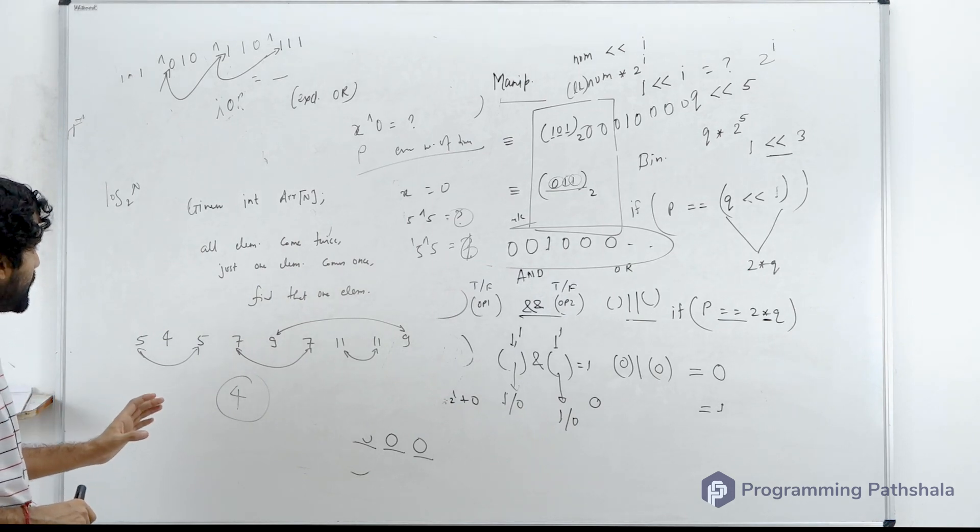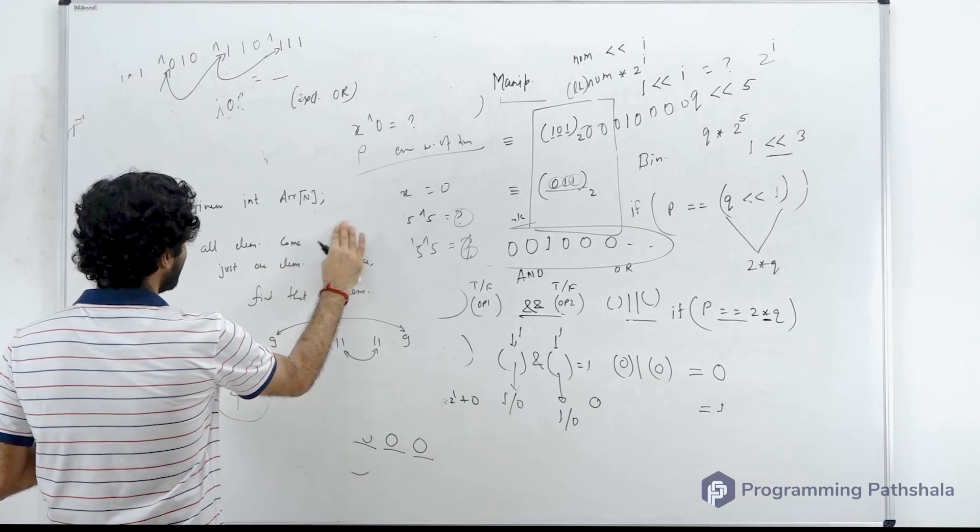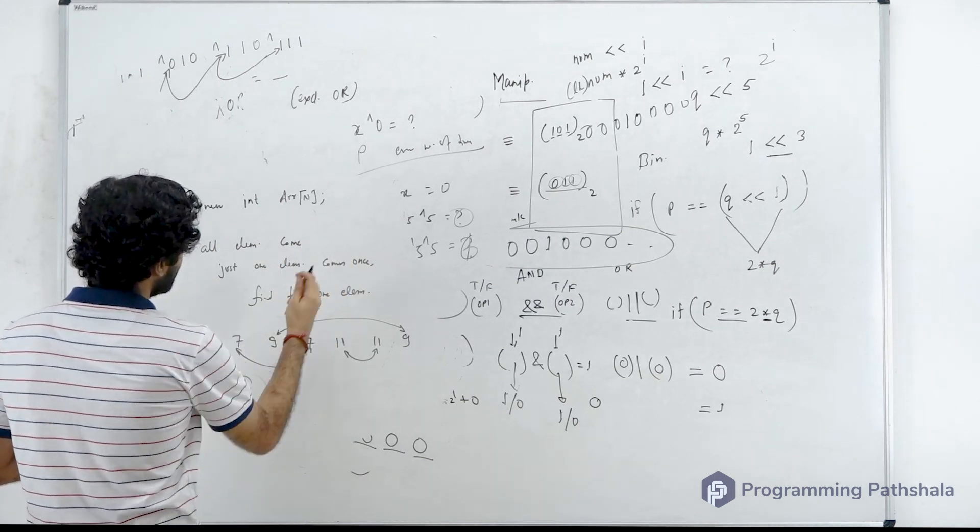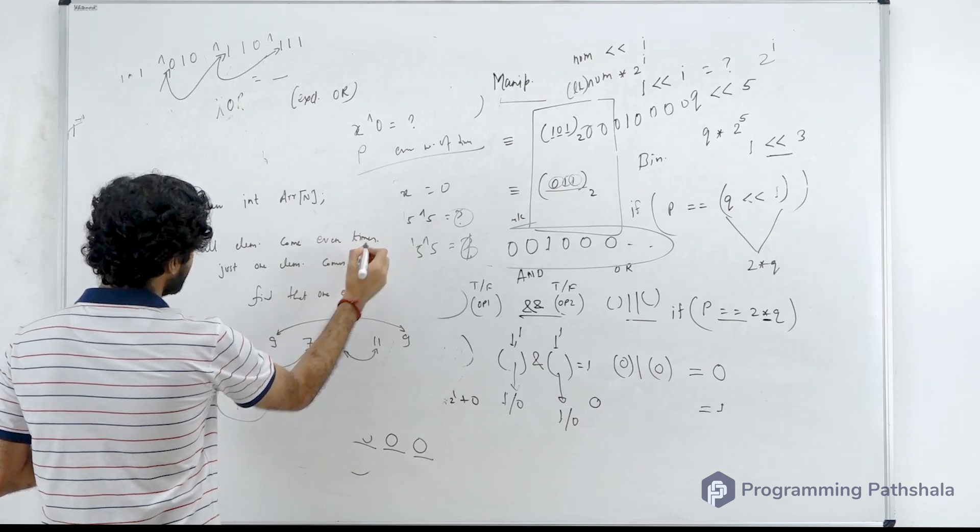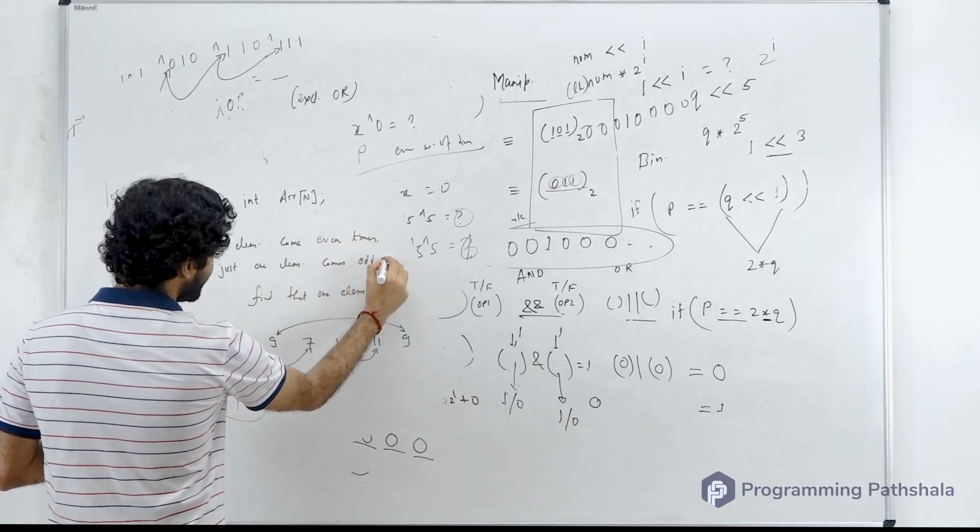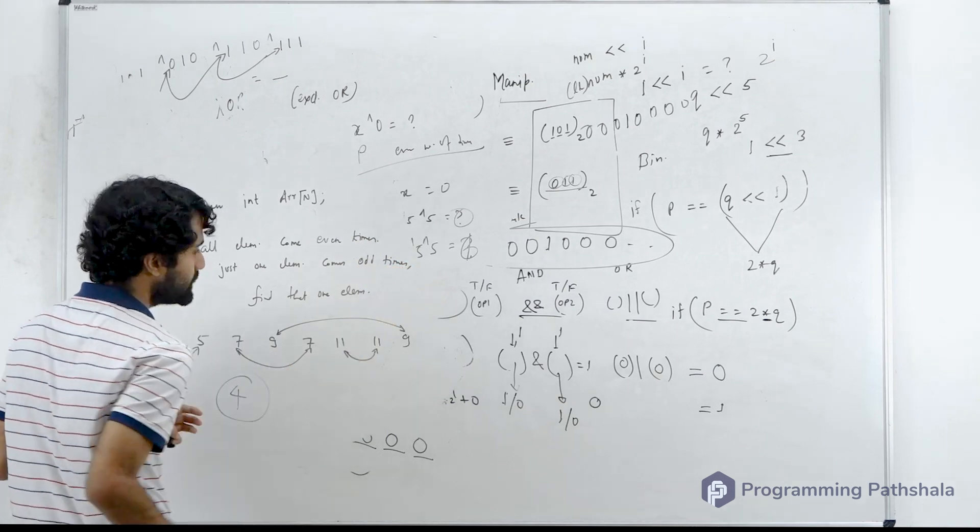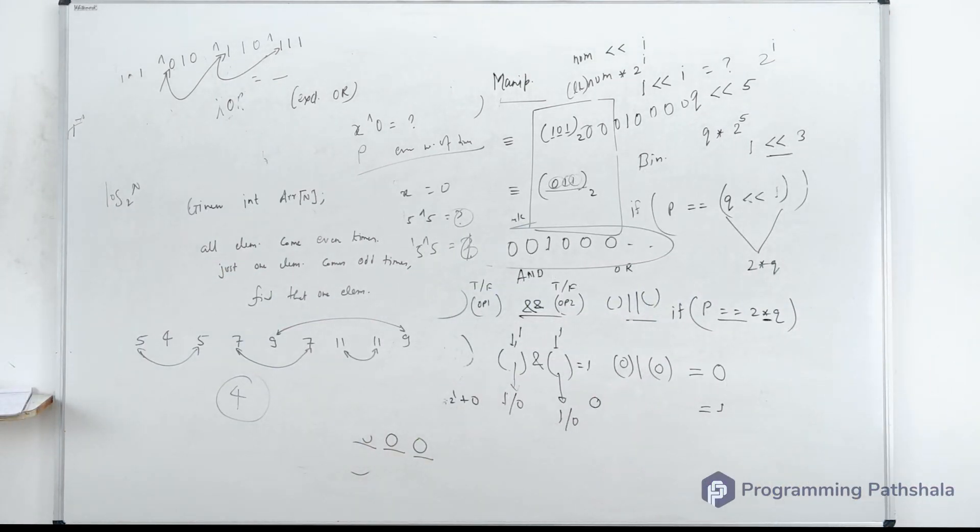So an important thing to understand over here is that let's say I change it a bit. I say that all element comes even times, just one element comes odd times. Read it very carefully. All elements come even times, just one element comes odd times. Will the current approach still work? It will work. Okay.